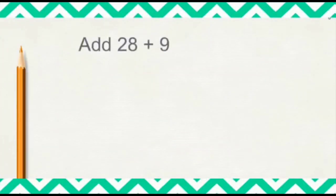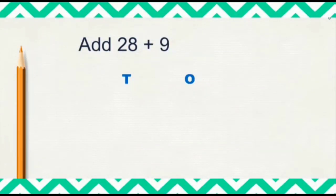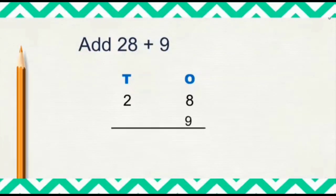Look at another example here, children. Add 28 plus 9. Set up 10s and 1s. In 28 there are 2 tens and 8 ones. And 9 is only ones — there are no tens — so we will write 9 under the 1s column. Next, we will add: what is 8 plus 9? 8 plus 9 is 17. So can we write 17 as it is? No, it is a 2-digit number, so we will retain 7 here.